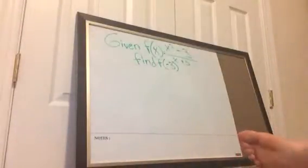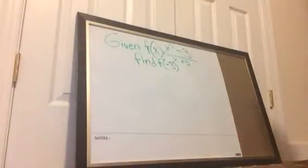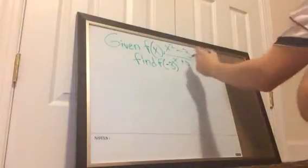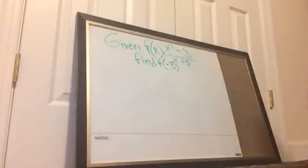Given f of x equals x squared minus 3 over x plus 5, find f of negative 3.